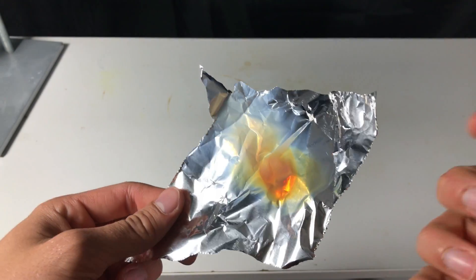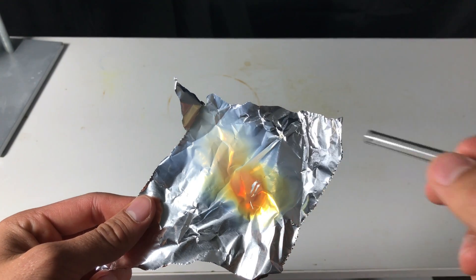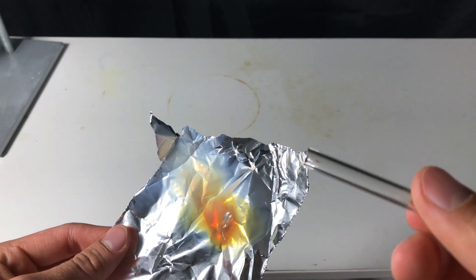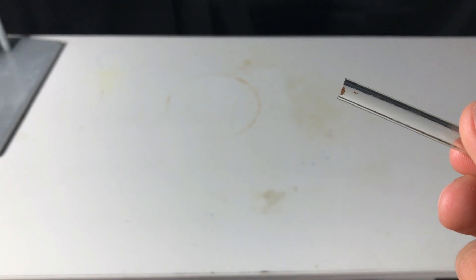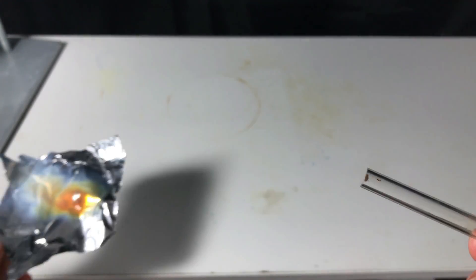On the aluminum foil, you can see a really fine layer of silicon dioxide, which you can easily scrape off.